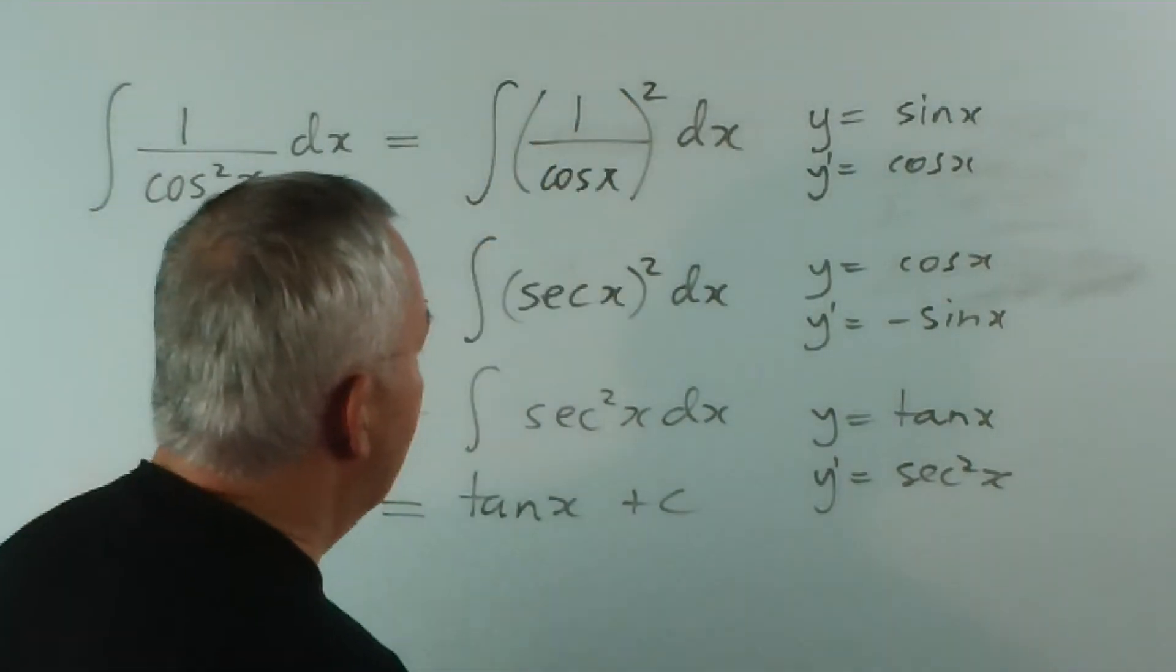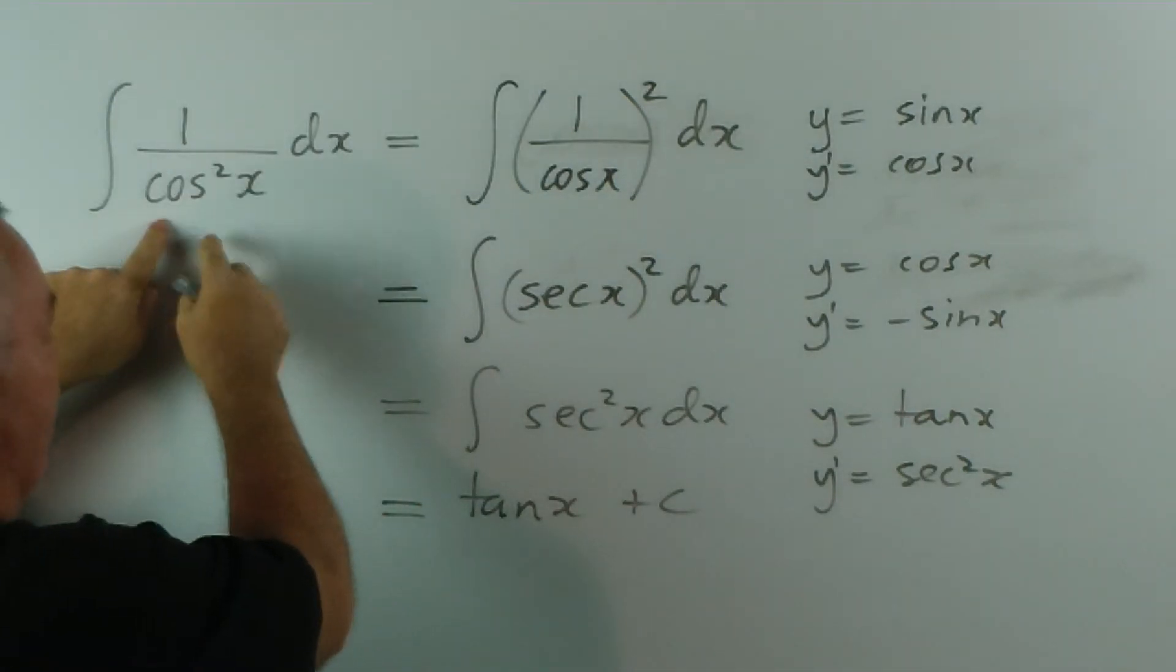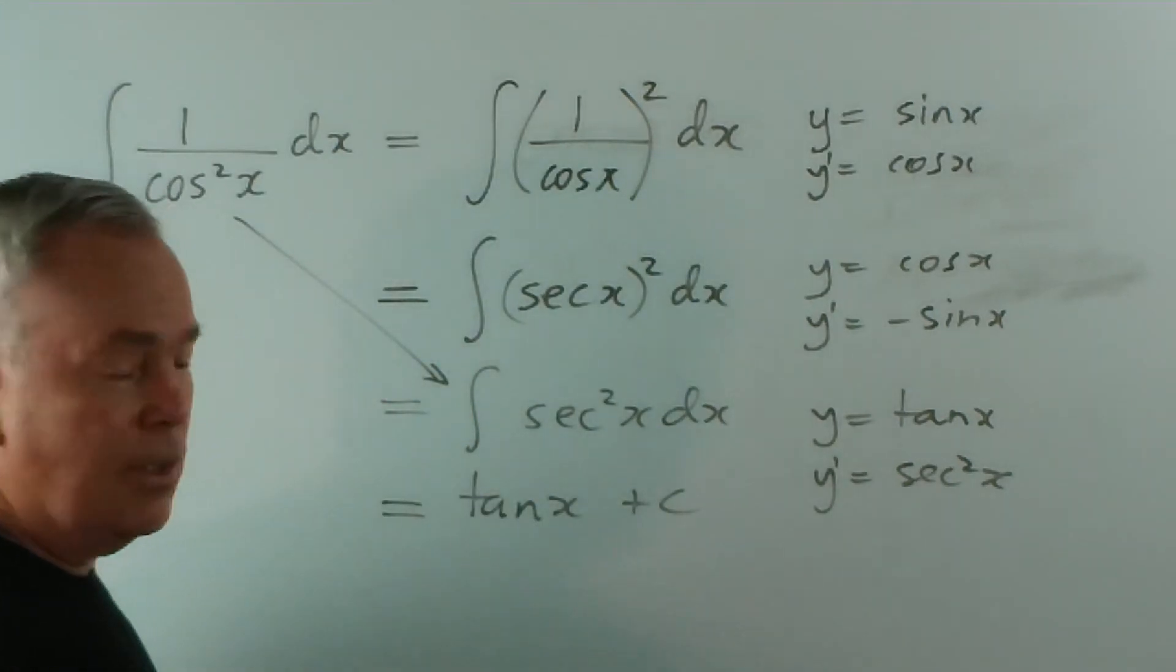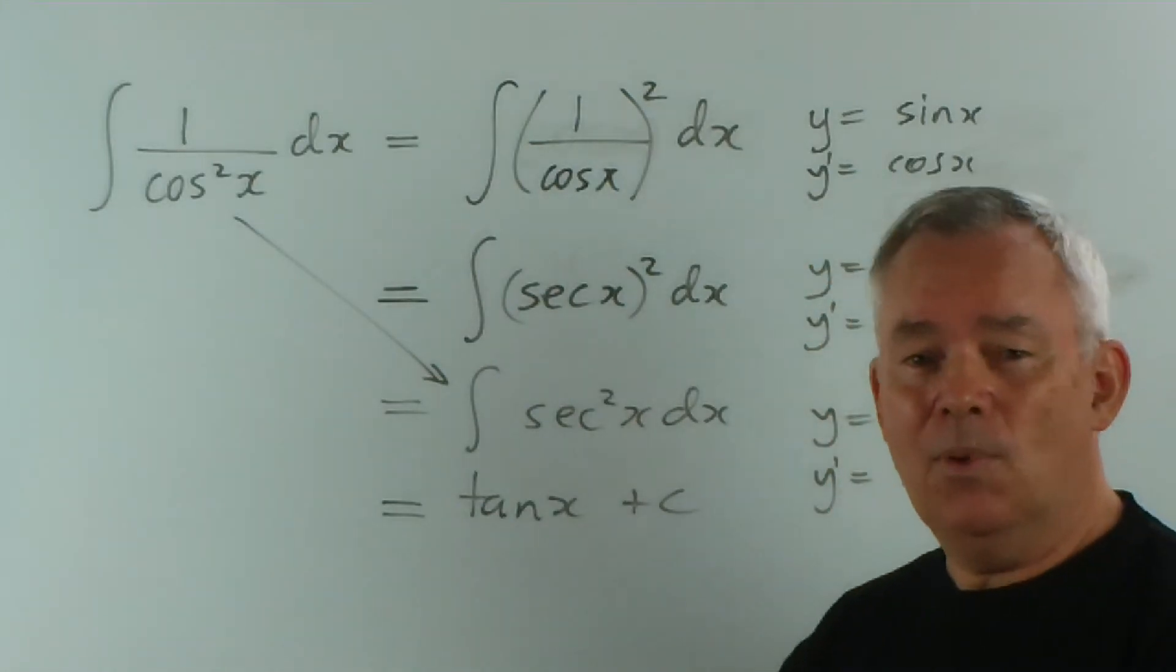Now you don't need to put these two middle steps in. If you understand that 1 over cos squared x is sec squared, you could have gone straight to that line and then straight to here. So in fact, the integration itself, the integral itself is actually quite a simple one.